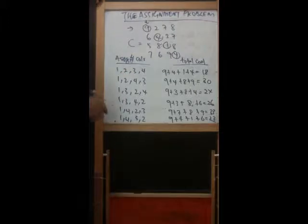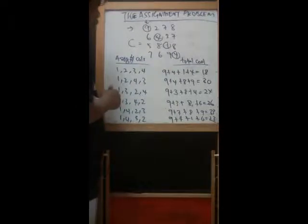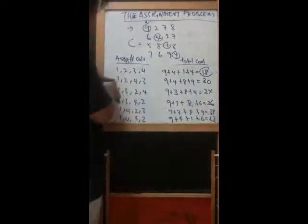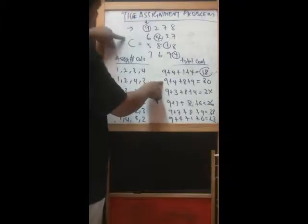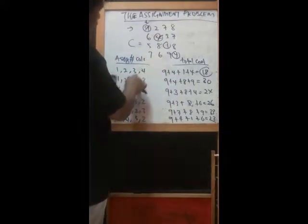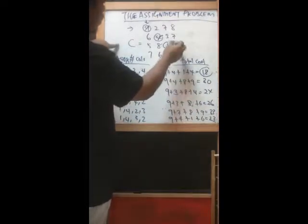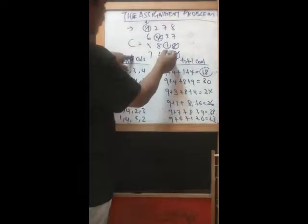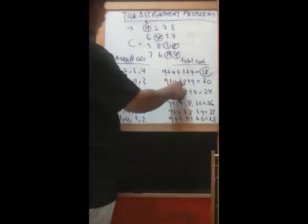After that we calculate the total cost. Let's say nine plus four plus one equals eighteen here. The second one: person one takes job one, person two takes job two, person three takes job four here, and person four takes job three here. So in total, nine plus four plus eight plus nine equals thirty, and so on and so forth.